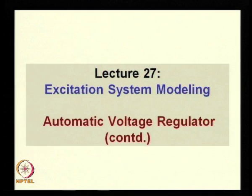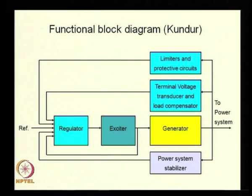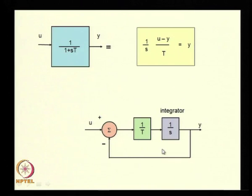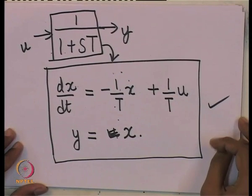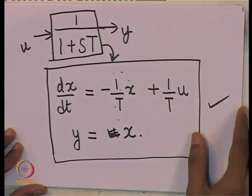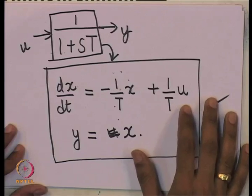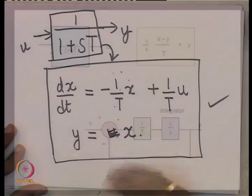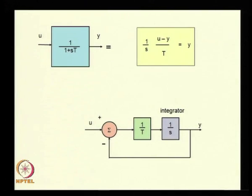Today's lecture is a continuation of our discussion of automatic voltage regulation, focusing on transfer function blocks. The first block pertains to the regulator: a first-order transfer function represented as 1/(1+sT), whose state-space representation can be written immediately. There is no unique state-space representation of a transfer function. You can also add non-linearities to the block diagram — for example, limiters — which we will discuss shortly.